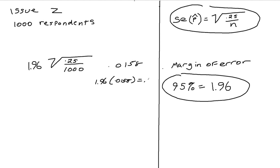I'm left with 0.03 or 3%. So when we're looking at using 1,000 respondents, our maximum confidence margin of error is 3%.